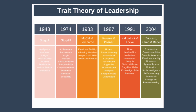Next we have the study done in 1983 by McCall and Lombardo. They examined both leadership success and failure and identified four traits critical to leader success: emotional stability, admitting mistakes, interpersonal skills, and intellectual breadth.